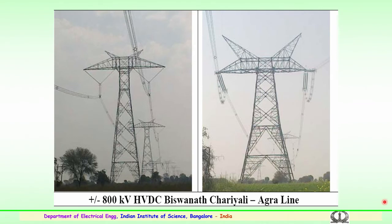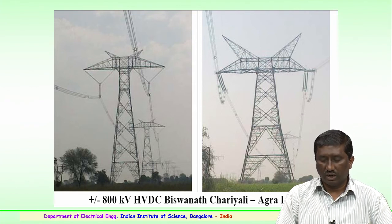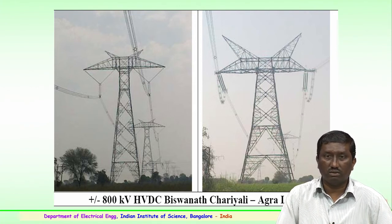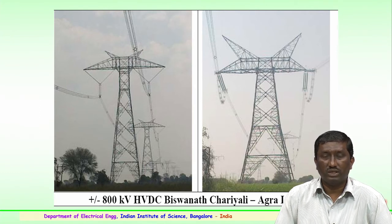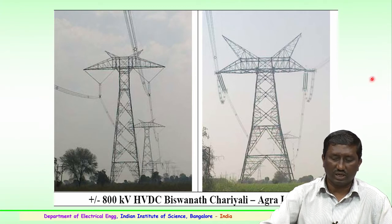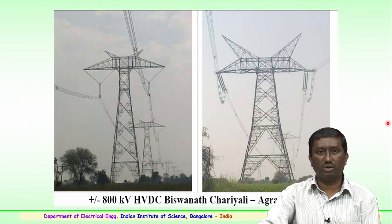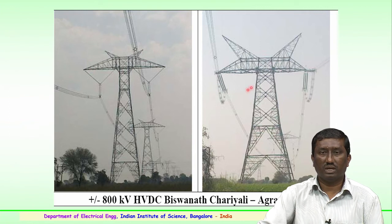This is the line that was very recently energized — plus minus 800 kV HVDC from Biswanath Charyali in Arunachal Pradesh to Agra. This line is more than 2000 kilometers in length and can carry a power of 6000 megawatts, representing a very important advancement in the country for transmitting power at a very high rating.